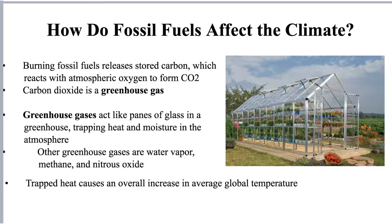It is important to have greenhouse gases at certain concentrations in the atmosphere to maintain the planet's temperature at a level that can sustain life — so we do need some greenhouse gases. Besides carbon dioxide, other greenhouse gases include water vapor, methane, and nitrous oxide. Carbon dioxide is not the only greenhouse gas; it is just the one that's increasing in concentration as we release carbon stored in the bonds of coal by burning it for energy.